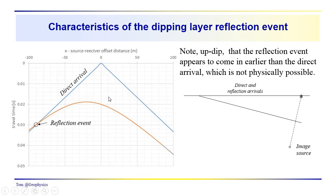Let's look at some features of the dipping layer reflection event. The reflection event should not be coming in ahead of the direct arrival — this part of the reflection hyperbola shouldn't be here. Any particular reflection event comes from the source to a reflection point up to the surface. The direct arrival travels directly along the surface to that point. With the same velocity, the direct arrival path length is less than the reflection path length, so there's some separation.